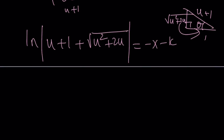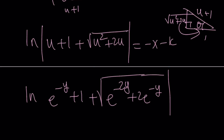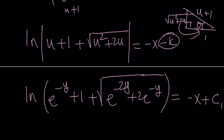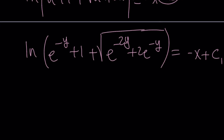Finally, replace u with e to the power negative y. We get the natural log of the absolute value of e to the power negative y plus 1, plus the square root of e to the power negative 2y plus 2 times e to the power negative y, equals negative x plus c₁. Since the argument is likely positive, we can drop the absolute value. And that's the solution — it's complicated, and you can't really extract y explicitly from here, but it's a beautiful implicit solution.